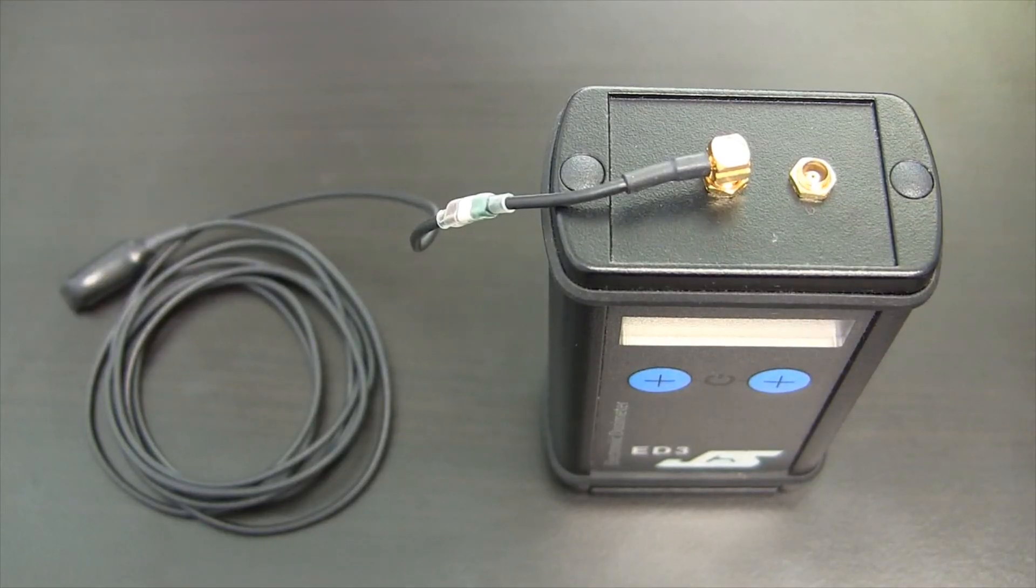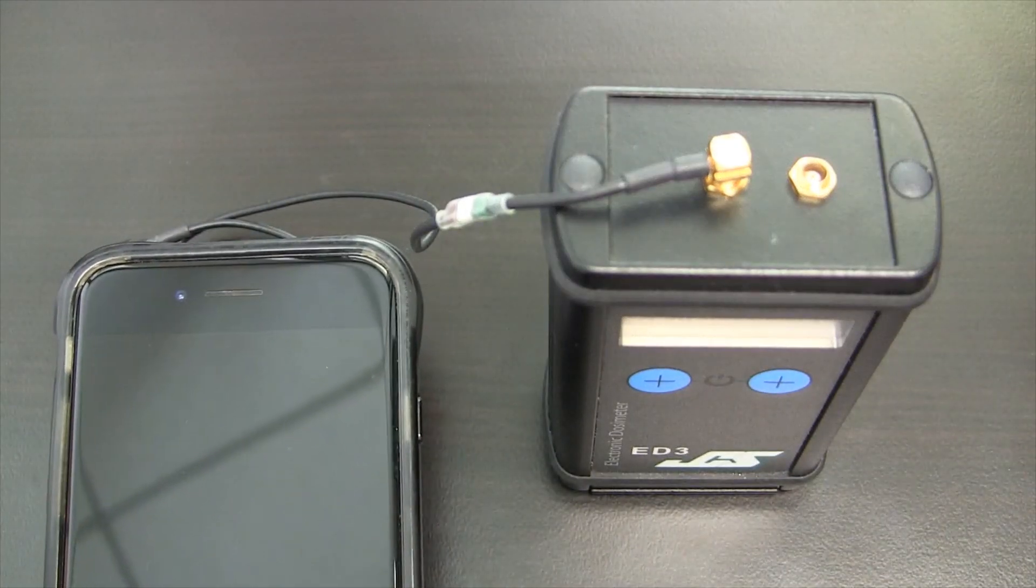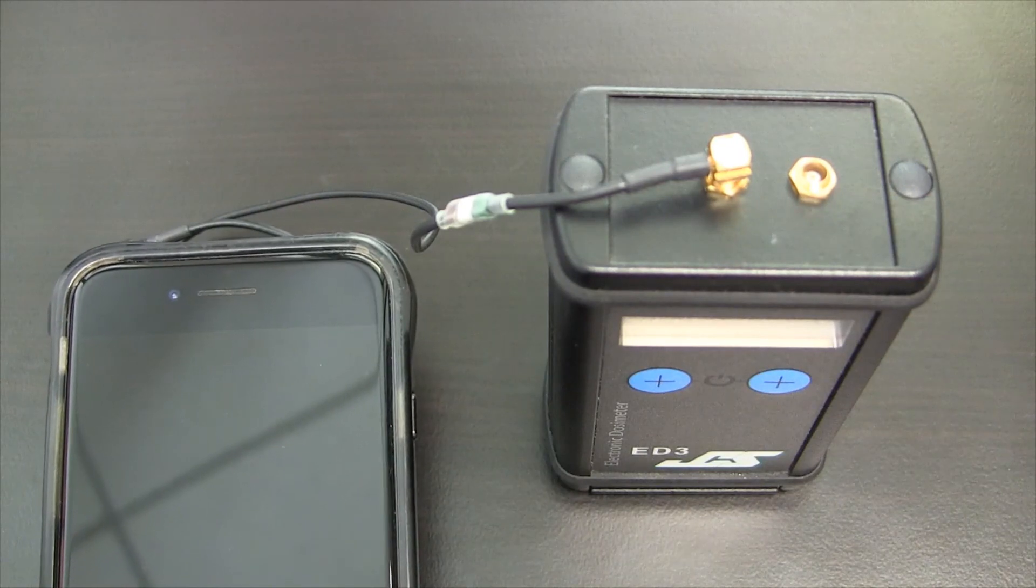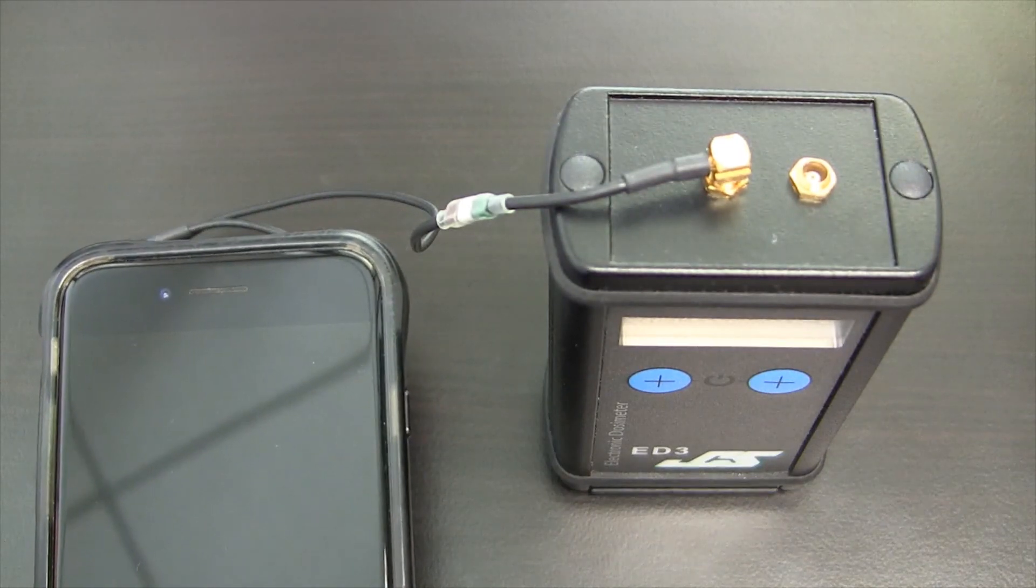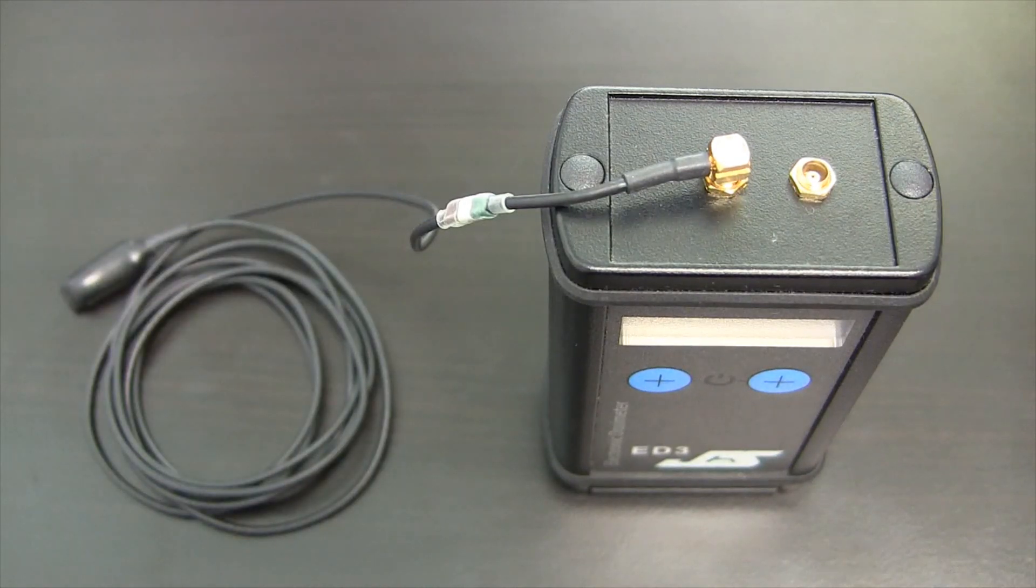When using the ED3 and the detectors, you want to make sure you keep the system outside of very high EMI environments. One example would be putting a cell phone very close to the detector because of the long lead. Even though it's shielded, the high EMI can cause interference and show up as counts inside of the system. This can also apply to other types of devices as well that emit high EMI, so it's best just to avoid them.